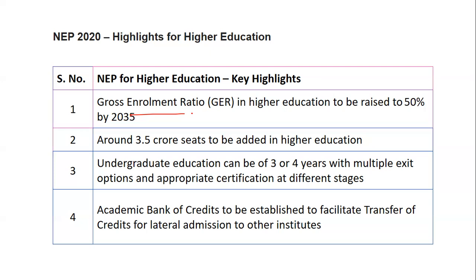Around 3.5 crore seats are to be added in higher education, meaning enrollment is to be increased. Undergraduate education can be of three to four years with multiple exit options and appropriate certification at different stages. From this point, there was a question based on levels — Level 6, Level 7, Level 8 — asking what each consists of.